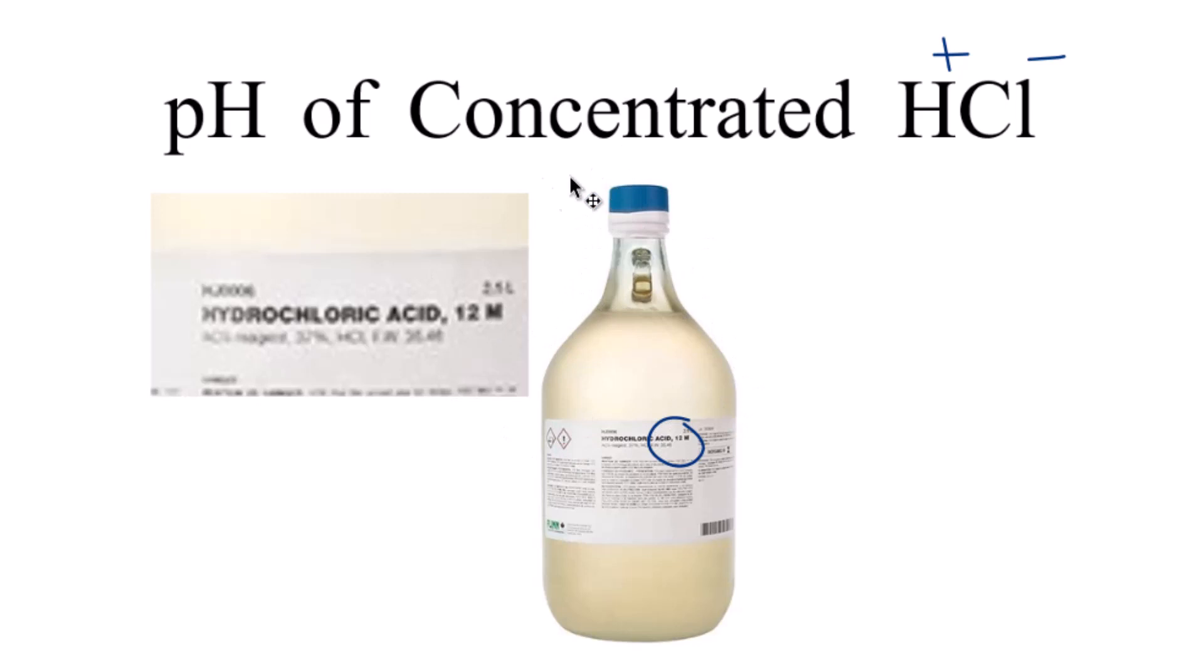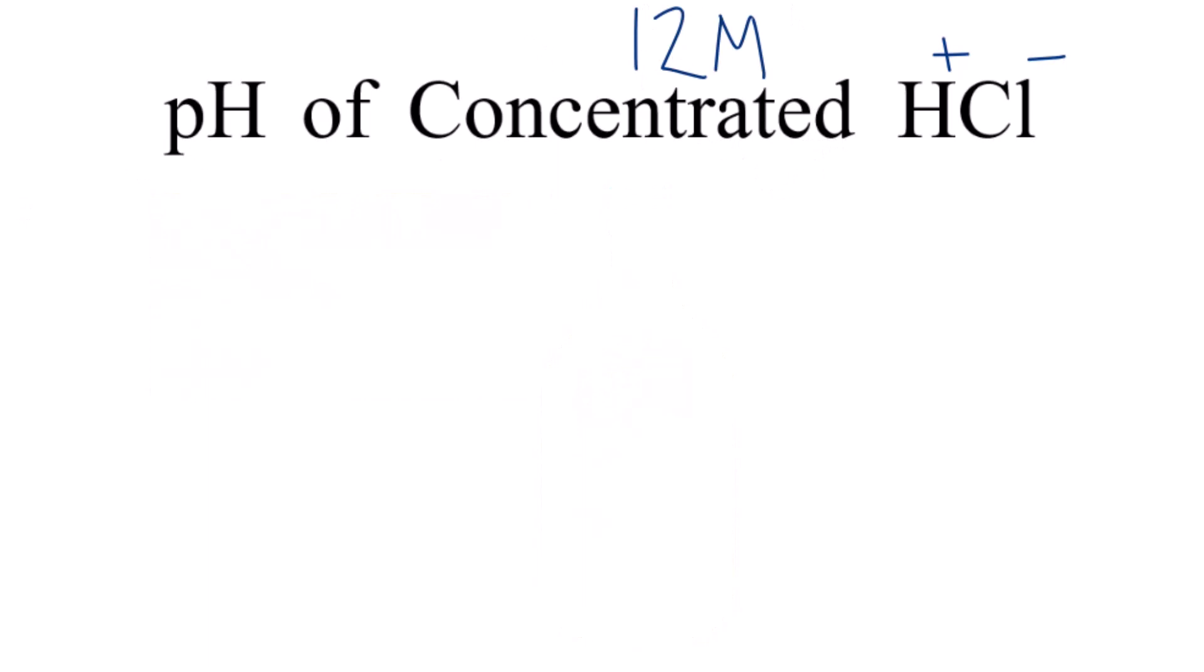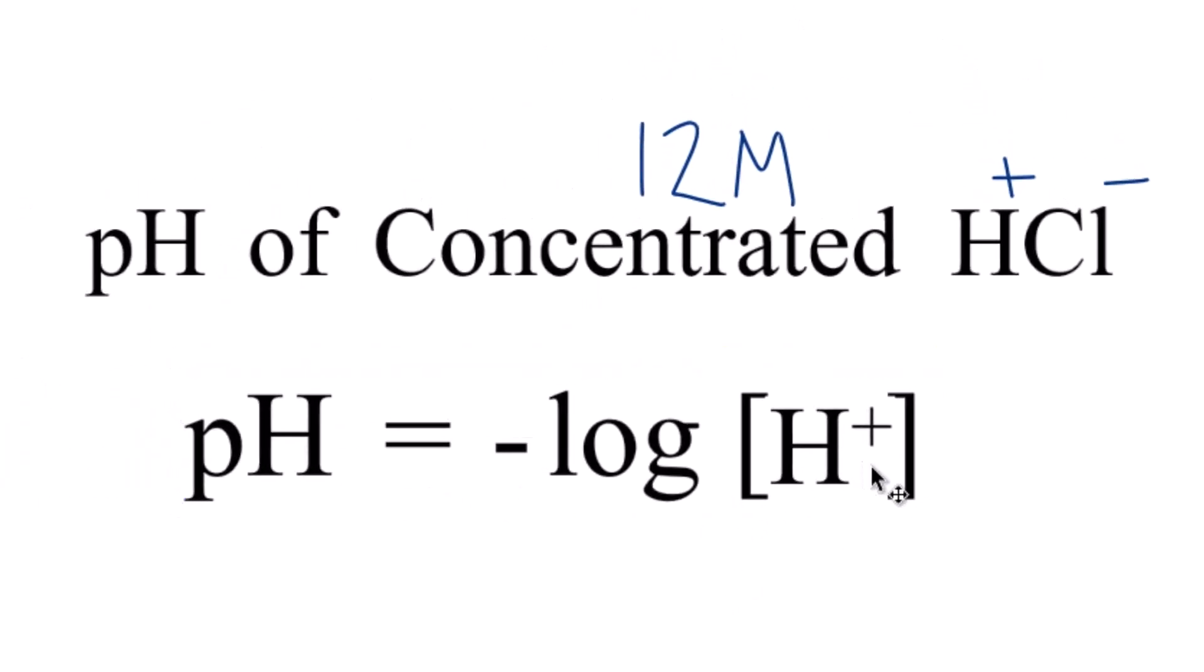We can use that information to find the pH of concentrated HCl. So let's write that up here. Now that we know the molarity, we just do this simple calculation. pH is the negative log of the concentration of the H plus ions, the hydrogen ions. That's the H in pH.